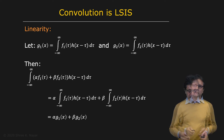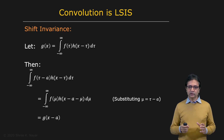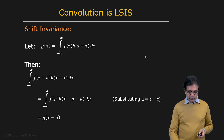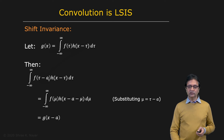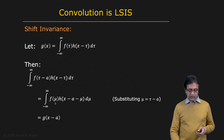So convolution is linear. Now we're going to show that convolution is also shift invariant. Here is convolution once again — that's the definition. And this time, what we're going to do is shift the input function f by a. So we're going to use a substitution — we'll define mu as tau minus a.